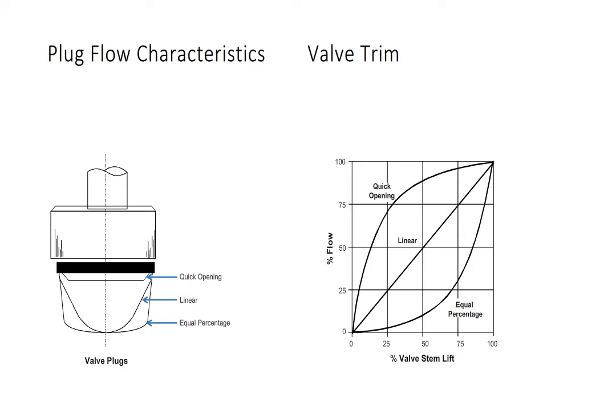Moving on to the linear plug on our graph, we can see that stroking the valve 25% results in a 25% flow rate. Stroking the valve stem 50% results in a 50% water flow and a 75% flow rate for a 75% valve stem lift or stroke. Clearly, we have a linear stroke to flow relationship.